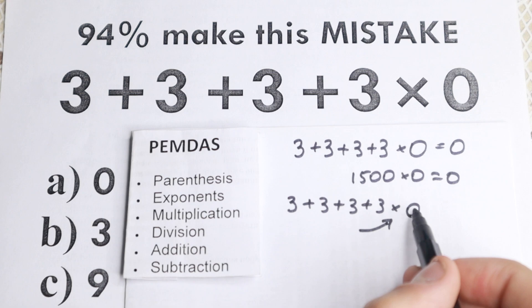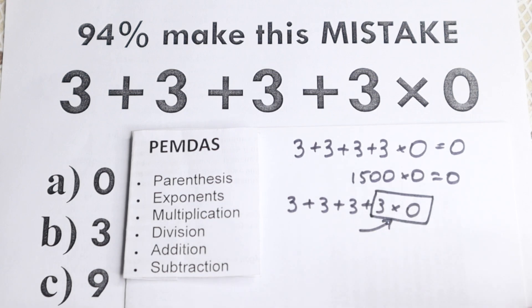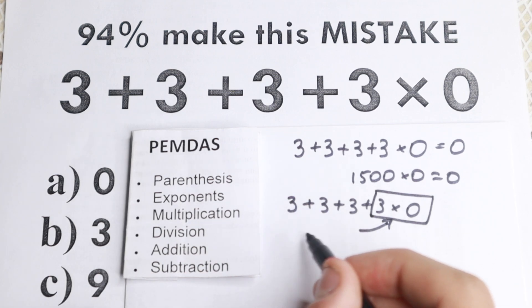So we need to start with this multiplication. So what numbers multiplication touch right here? So on the left, this 3 and on the right, this 0. And really important step right here, because if we start with this multiplication, we need to start with this because we have a PEMDAS order.